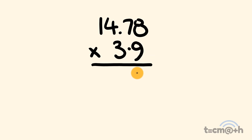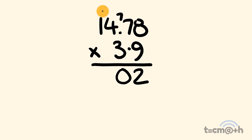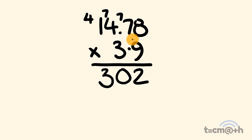So first off we have 9 times 8 which is equal to 72 — put the 2 down there and carry the 7. Next we have 7 times 9 which is 63, plus 7 which is equal to 70 — put the 0 there and carry the 7. We have 4 times 9 which is equal to 36, plus 7 which is equal to 43 — put the 3 there and carry the 4. And 1 times 9 is equal to 9, plus 4 is equal to 13.